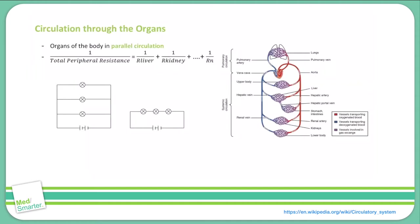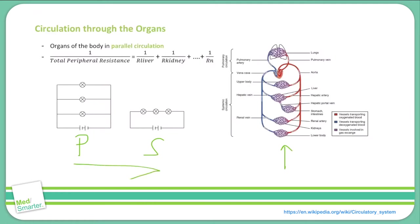If you take a look down here you can see some examples of circuits or vessels that are in series and in parallel. In our video on resistance we discussed how you can determine the total resistance for vessels in series or in parallel. This diagram over here depicts how the blood supplies to the major organs of the body are organized. Comparing it to the series and parallel diagrams, these vessels are arranged in parallel.